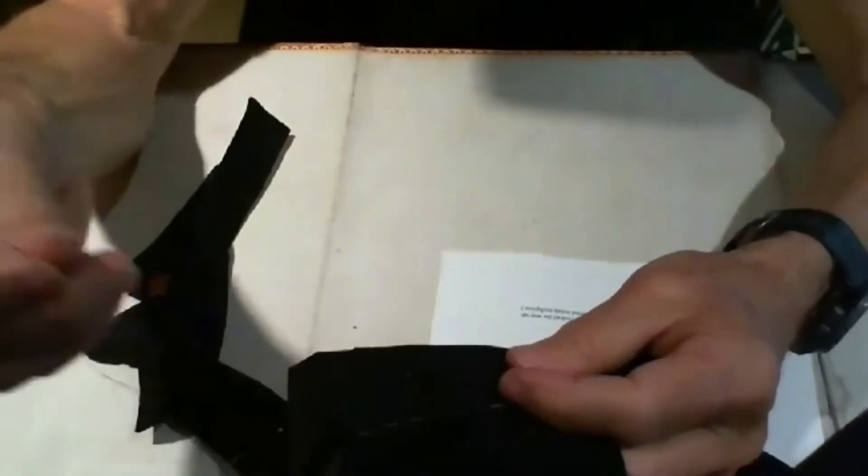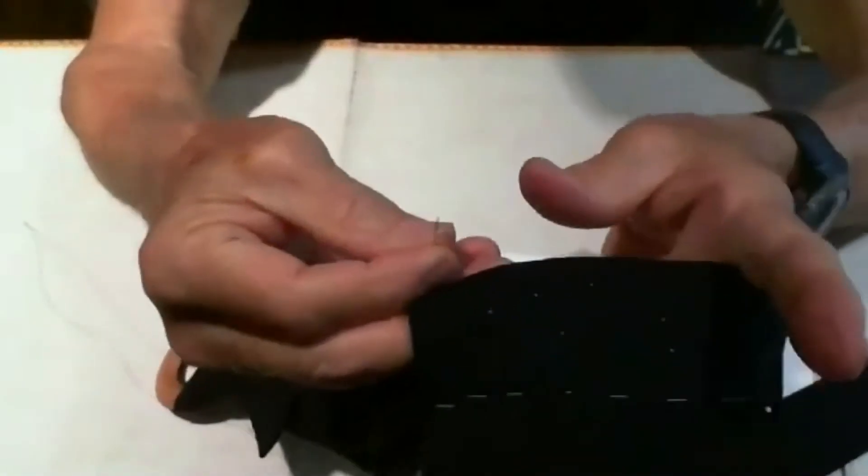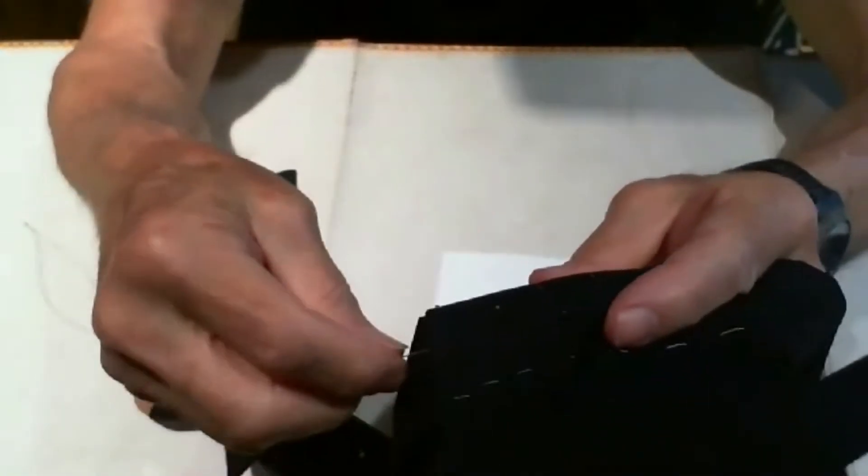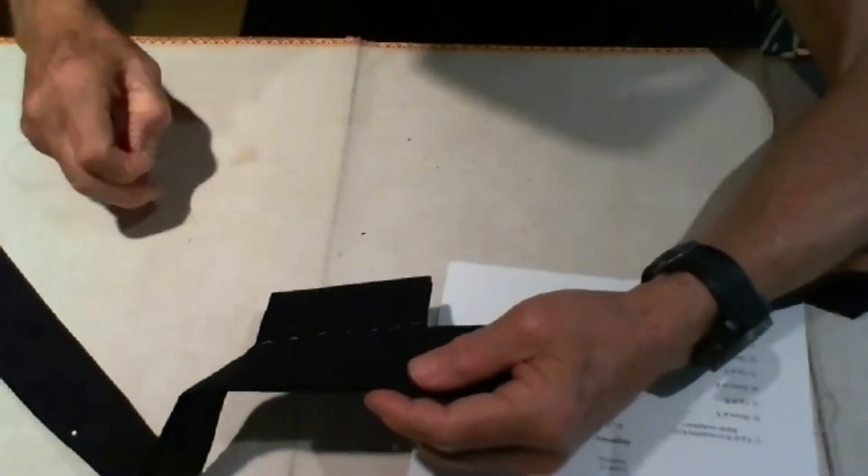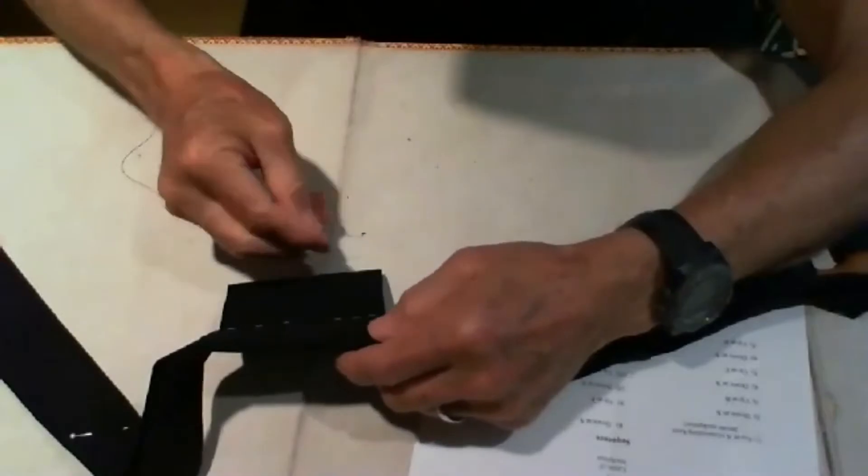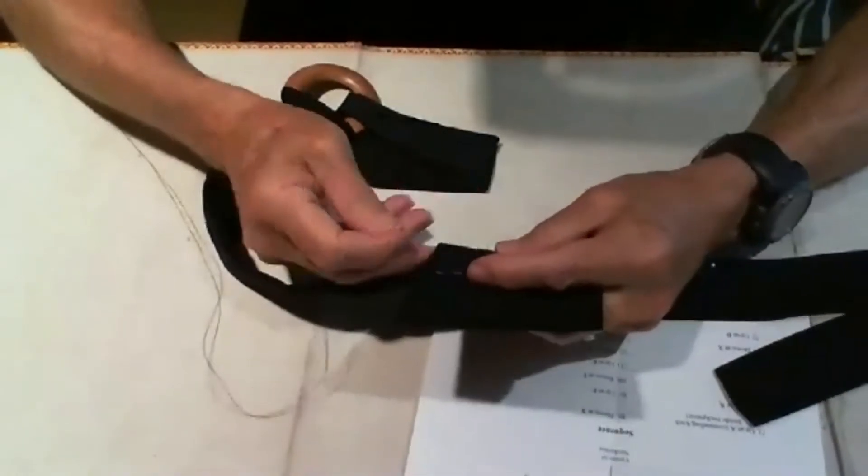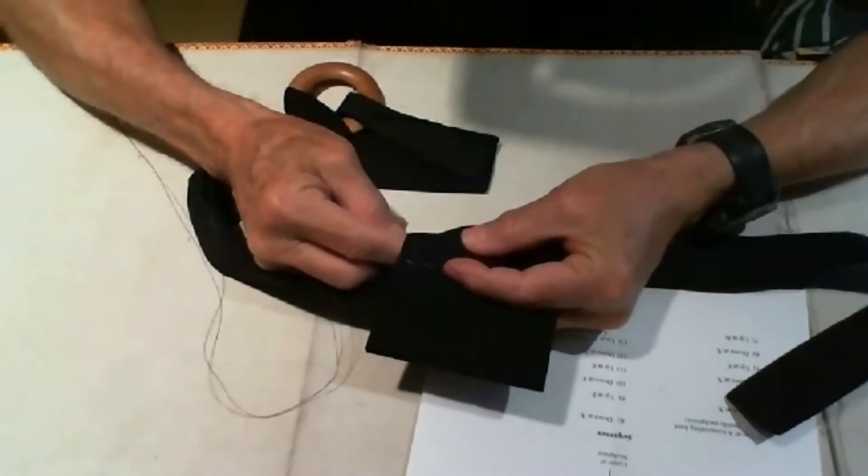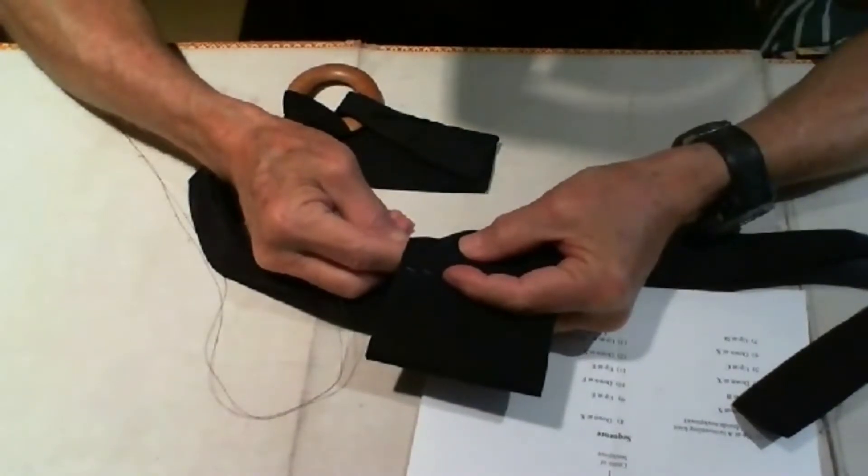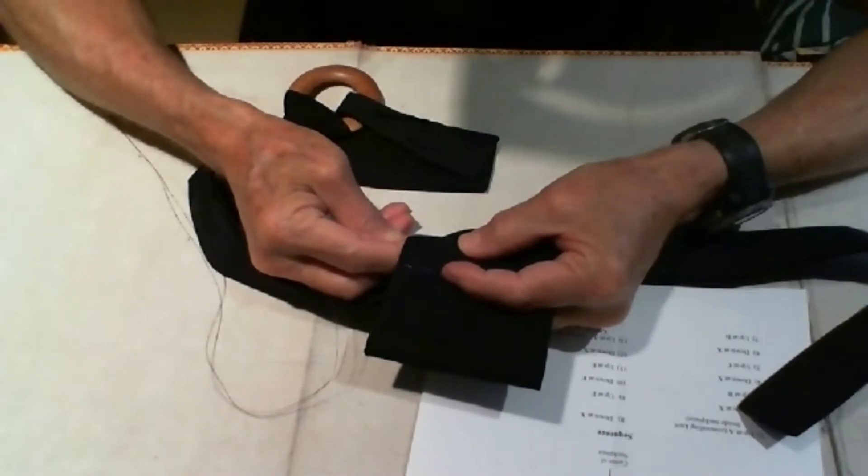Now we begin sewing by getting inside and coming up at A. So the first thing to do is to come through the back and come up at A. The needle comes up at A, and then we're going to head off to X. The needle comes up at what I would call three o'clock on my dot.